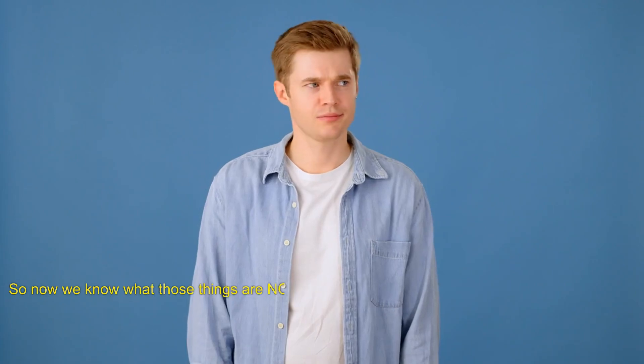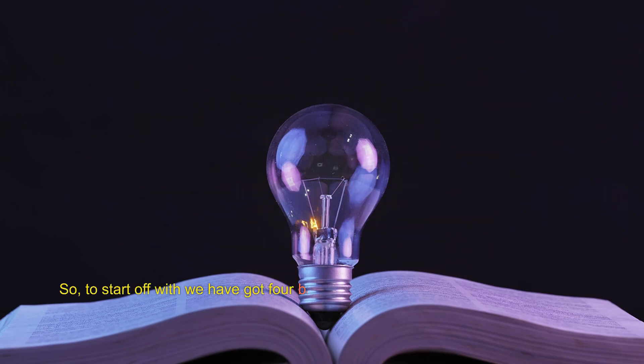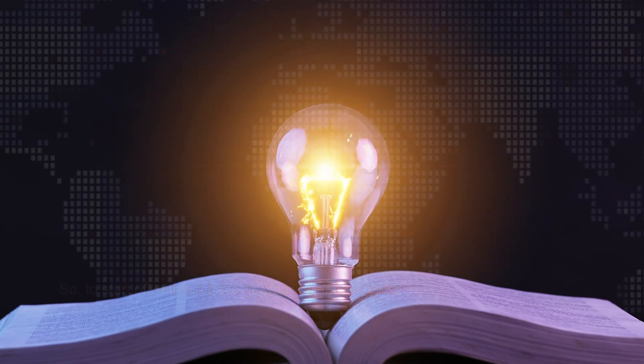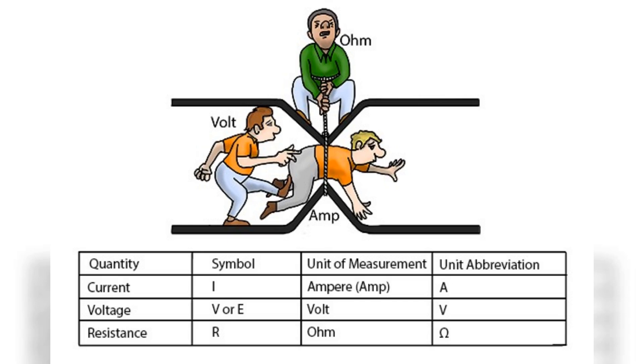And an electrical connection is not something you feel when you are attracted to a person. So now we know what those things are not. Let's find out what they are. To start off with, we have four basic concepts. A volt (V), which drives the current through the wire. It's kind of like water pressure. It can be measured with a voltmeter. You've probably got some big 12-volt batteries on your boat